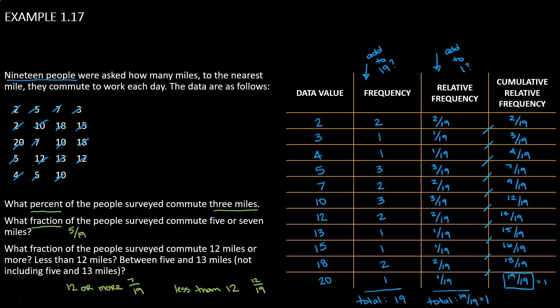Lastly, we're asked to find the fraction of people surveyed who commute between 5 and 13 miles, not including 5 and 13. So from 5 to 13, that would include all of these rows. But the part that's in parentheses that says do not include 5, do not include 13, that tells us we're actually just looking at the people who commute 7, 10, or 12 miles. So we're just going to add those fractions here. So we have 2 plus 3 plus 2, that would be 7 over 19.